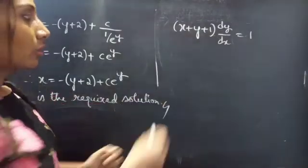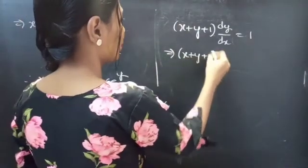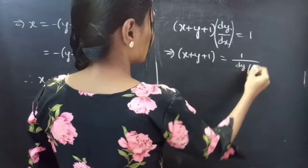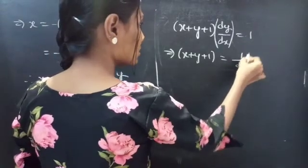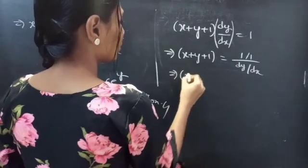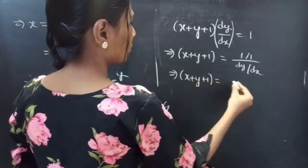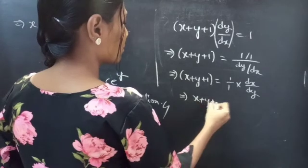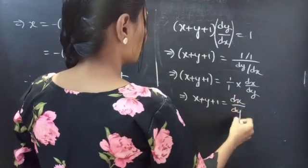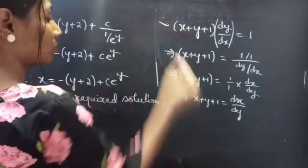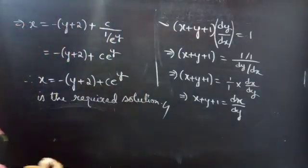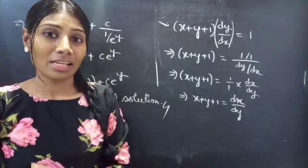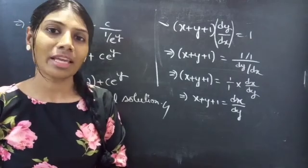So there is the given equation. You can write x + y + 1 as: take dy/dx to the RHS and get 1/(dy/dx), which is dx/dy. Then x + y + 1 = dx/dy. Some may get confused about how this step follows, so now it's clear. So we have seen a problem from linear equations in x. Hope you understood. We will see you in the next video — until then, bye-bye.